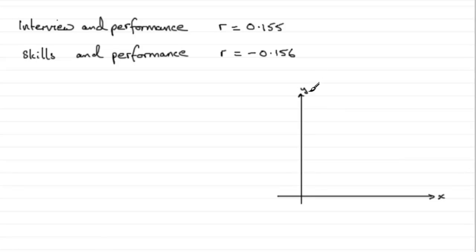Well, if we take the vertical axis Y for performance, let's just write that in. Then for the first one we had X, which was the interview, so we'll just write that in there. And what we had then was that R turned out to be 0.155.